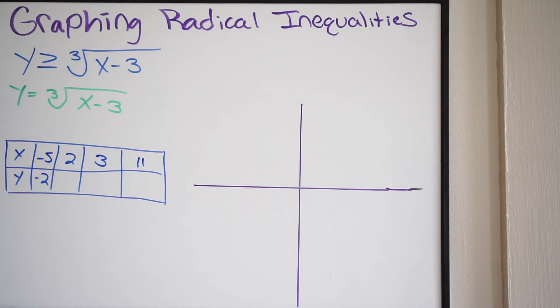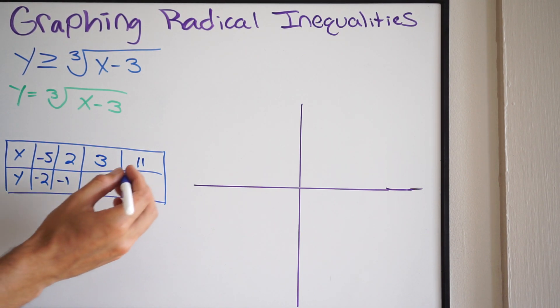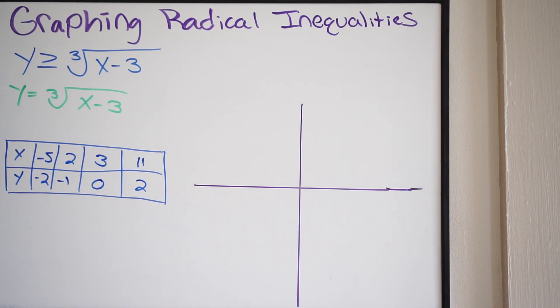Alright, let's plug these in and see what we get. So, when we plug in a negative 5 into the following, we get negative 5, and a negative 3. Well, that's going to be negative 8. So the cubed root of negative 8 is going to be negative 2. Okay, let's do a 2 now. 2 minus 3 is negative 1. The cubed root of negative 1 is just negative 1. Okay? So moving on, let's go ahead and do 3 now. So if we plug a 3 in, 3 minus 3 is going to be 0. The cubed root of 0 is just 0. Alright, and then 11 minus 3 is going to be 8. The cubed root of 8 is going to be 2. Alright, so we have our points that we can now put on this graph.